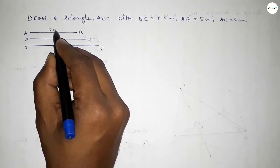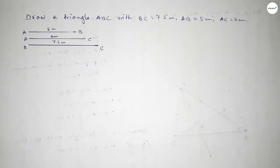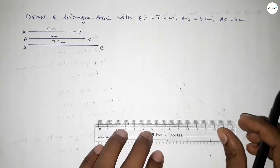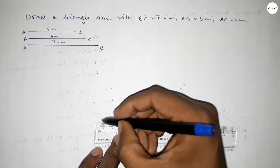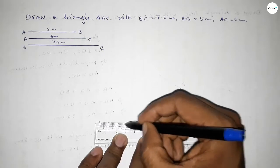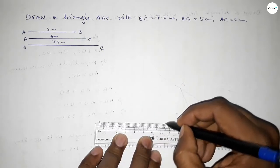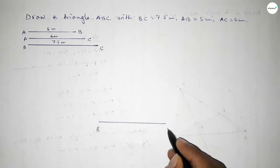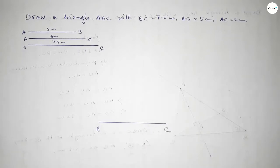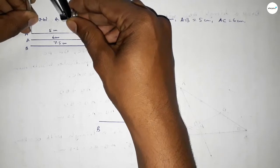So this is 5 centimeters, 6 centimeters, and 7.5 centimeters. Now first we have to draw here the BC line of length 7.5 centimeters. So this is 7.5, taking here B and here C.